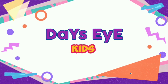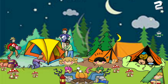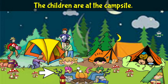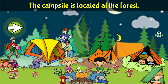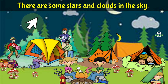Good day, kids! Describe the picture — look at the picture for a few seconds and then describe it. This is a picture of a camping trip. The children are at the campsite. It is nighttime. The campsite is located at the forest. The moon is in the sky. There are some stars and clouds in the sky.